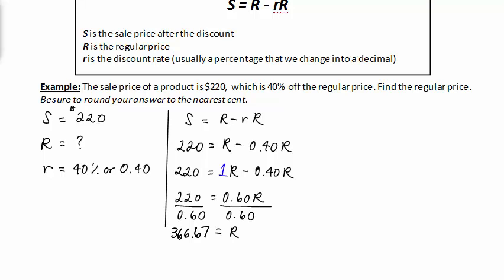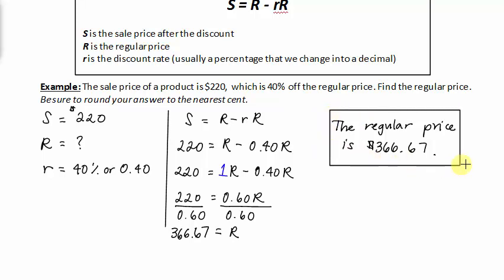What does this mean? This means that the regular price is $366.67. Now recall the regular price is the original price of the product, which makes sense why the regular price here is more than the sale price.